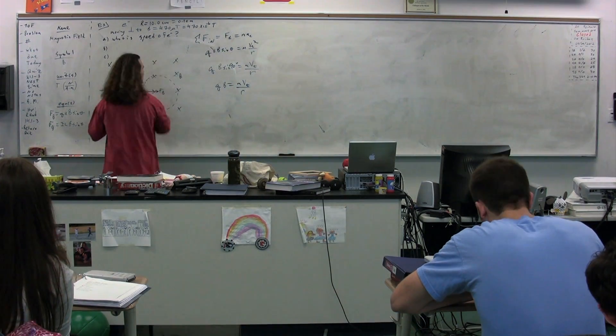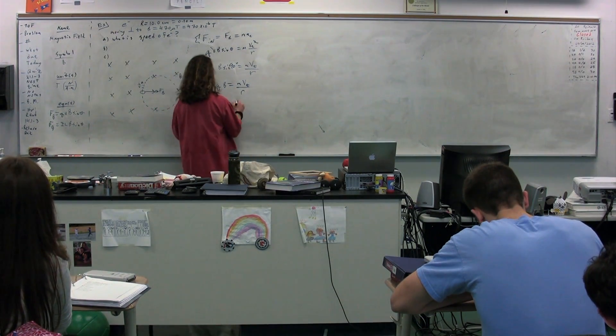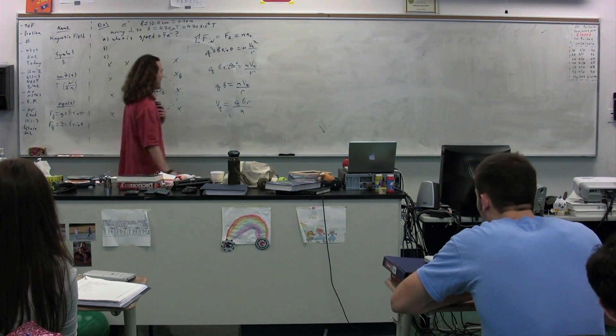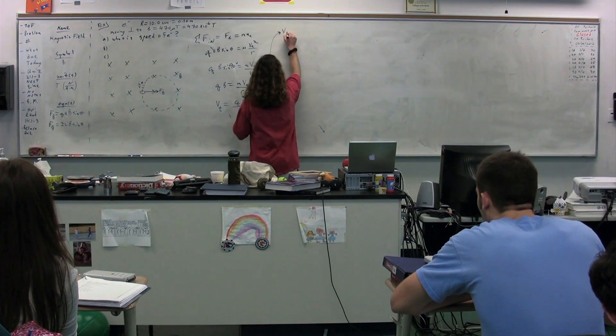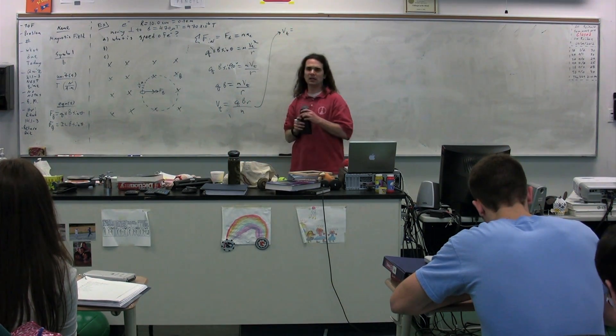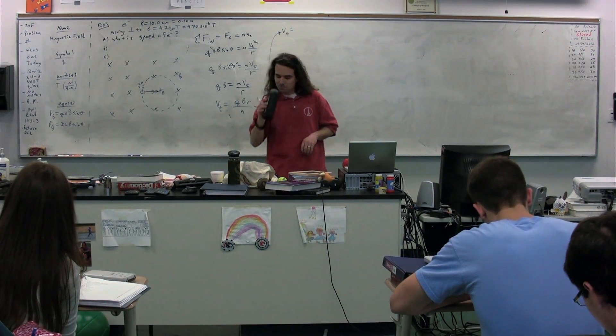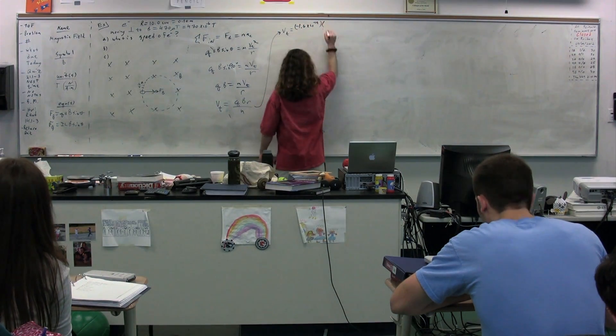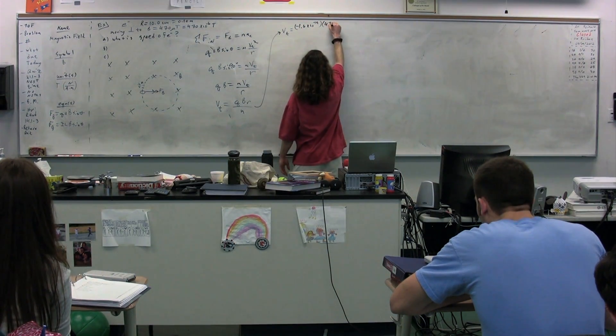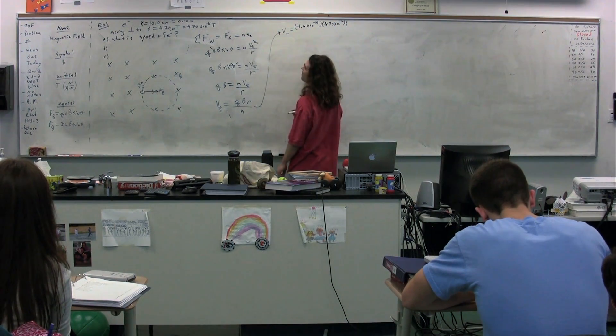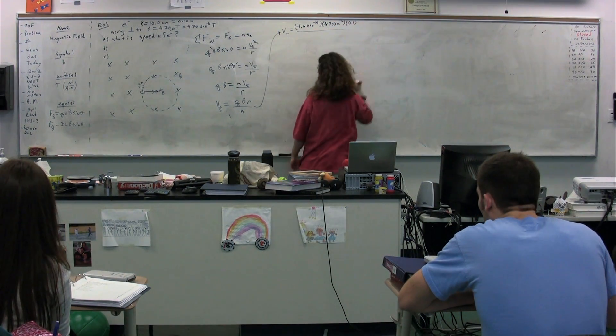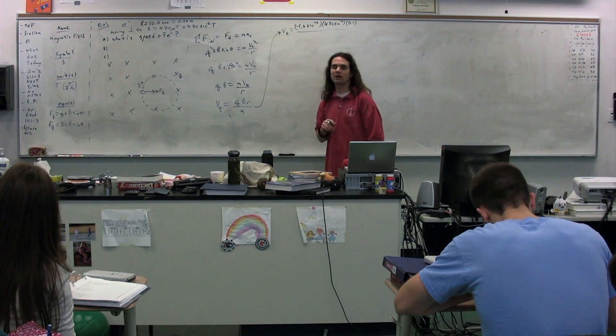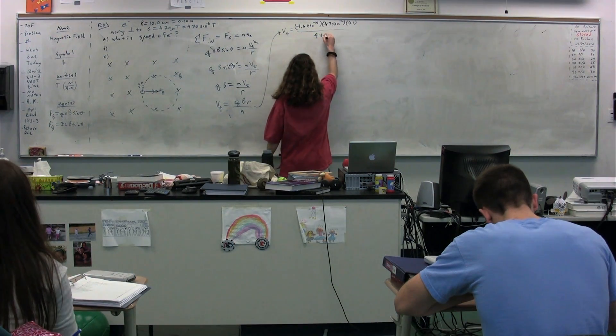We're trying to find the speed. So we're going to solve for the tangential velocity. It's going to be Q times B times R divided by the mass. The charge times the magnetic field times the radius divided by the mass. We have all of this information. So the tangential velocity equals the charge on the electron is what, Wheatley? Negative 1.60 times the magnetic field. Times the magnetic field which we got 470 times 10 to the negative 6 multiplied by the radius, 0.1 divided by the mass. Wheatley again. An electron. 9.11 times 10 to negative 6.1.